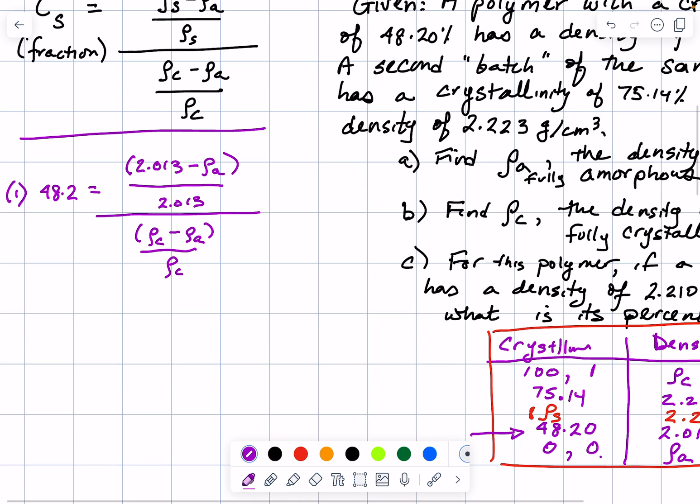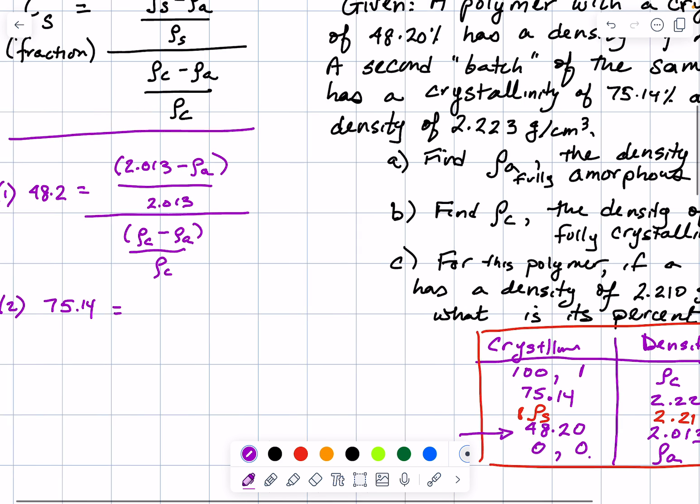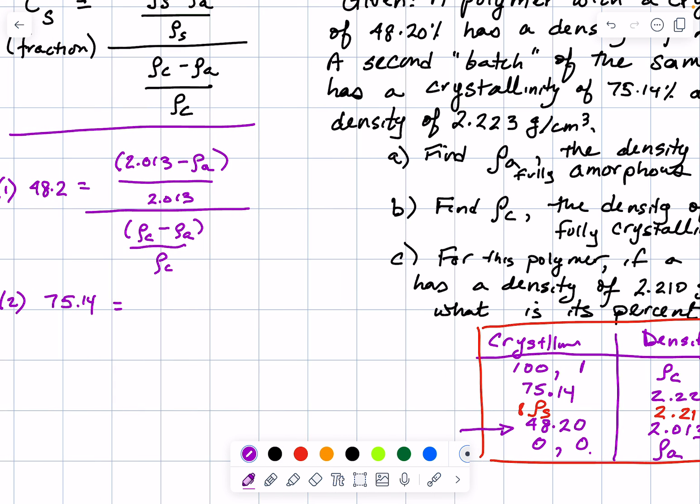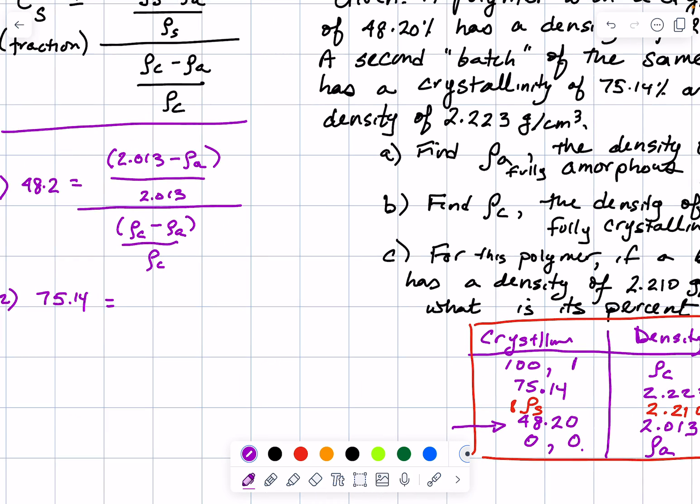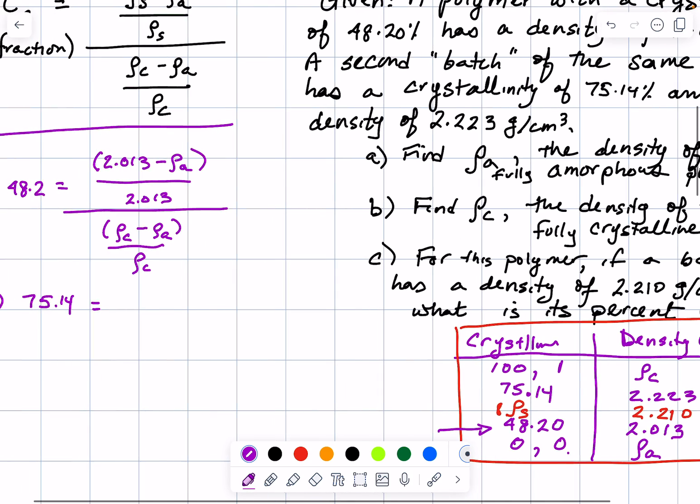The second equation is that 75.14% of this second batch was crystalline, and its density was 2.223. So 75.14 equals 2.223 minus ρa divided by 2.223, and then dividing by ρc minus ρa over ρc.